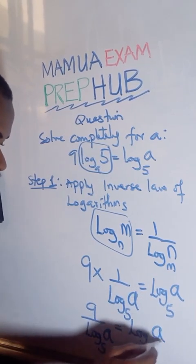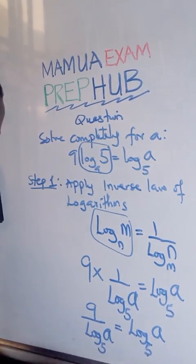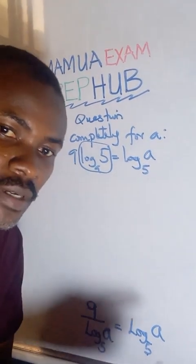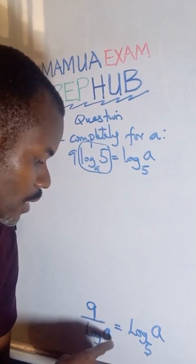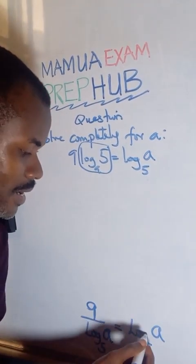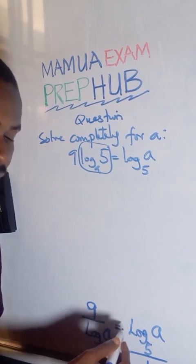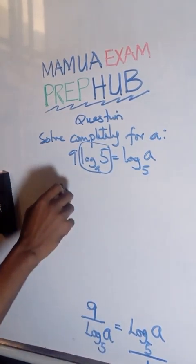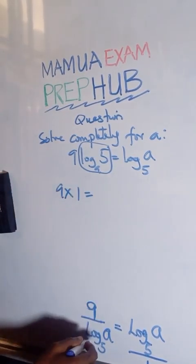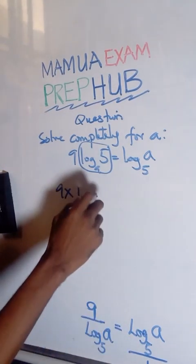So log base 5 of a. I haven't gotten this yet. We are going to quickly cross multiply. I can still write this as over 1. So if we cross multiply, we have 9 times 1 and log base 5 of a times log base 5 of a.